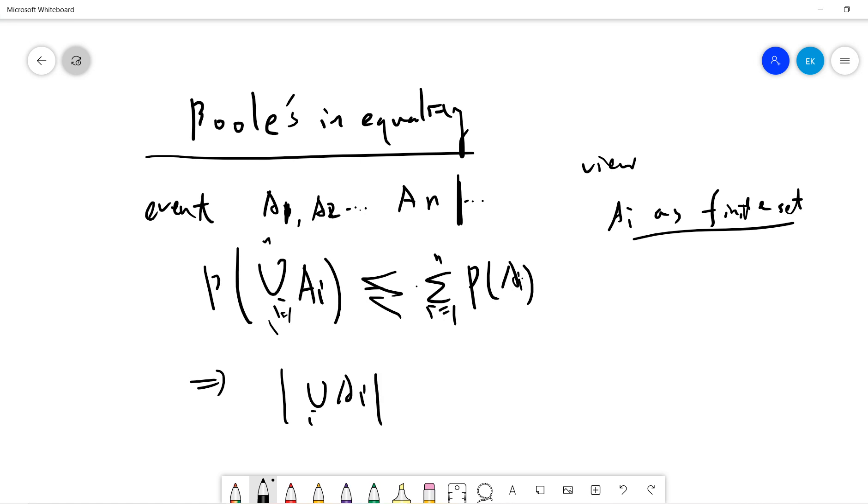If you like measure theory, this is called the result from sigma subadditivity. If you know about measure theory, this is the probability version, and this is the finite set version. This is not difficult to prove.